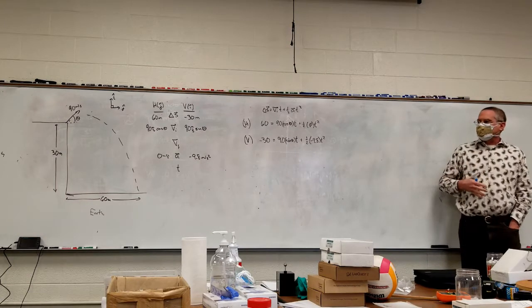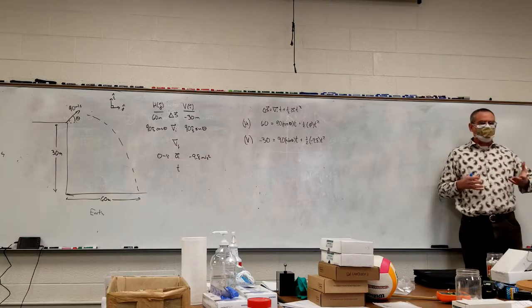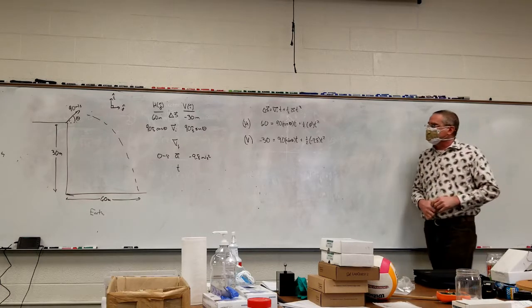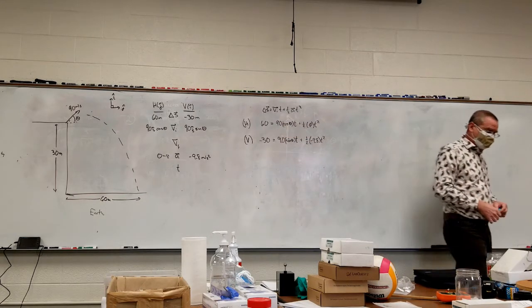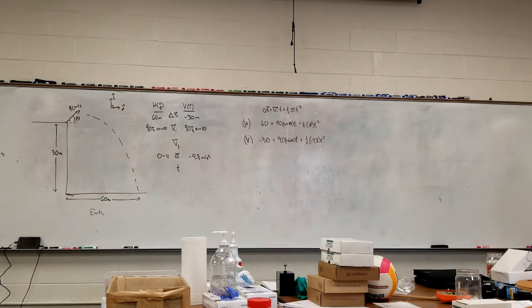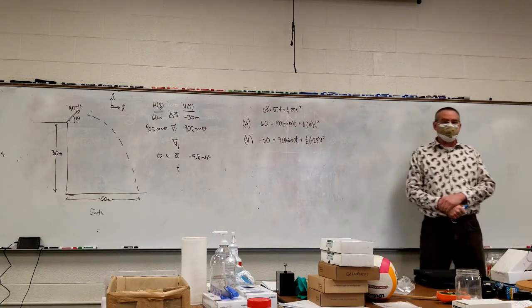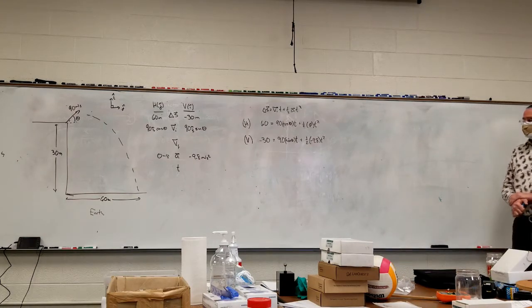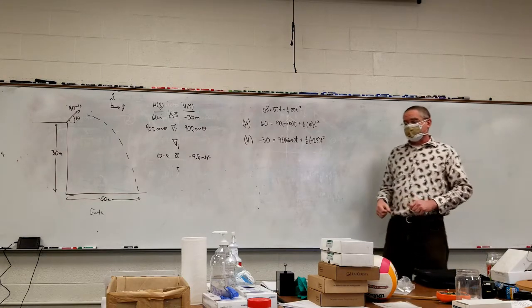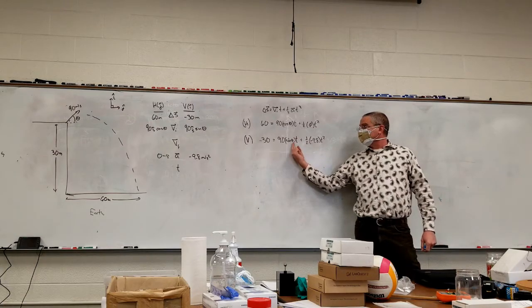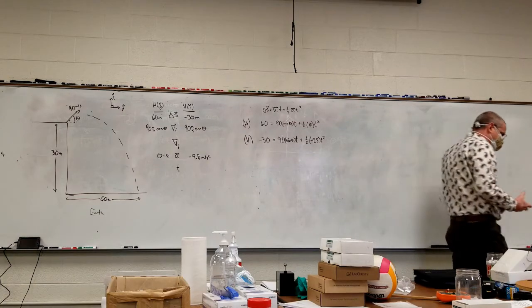What physics typically does is it sets up the equations, and then it becomes a math problem. Then physics kicks in at the end for the interpretation. So this class gets us to here. Now it's a question of how do you solve it. I have two equations, two unknowns, so there's a good chance it's solvable. Unfortunately, what makes this more difficult is we have sine theta and cosine theta — theta is trapped in with the trig function. So we have to somehow reconcile that.